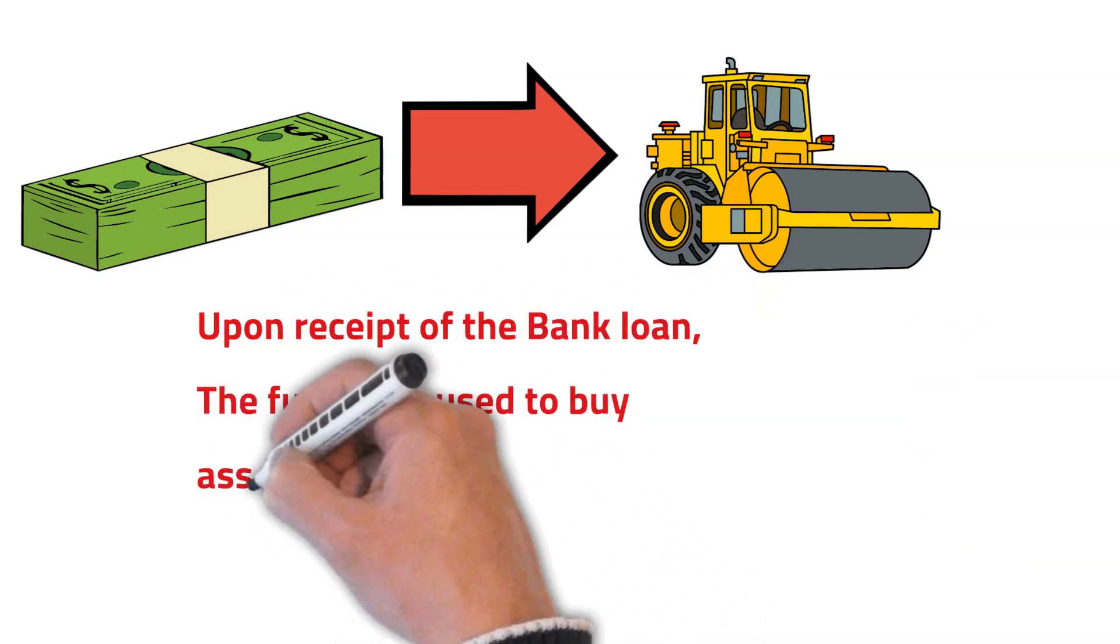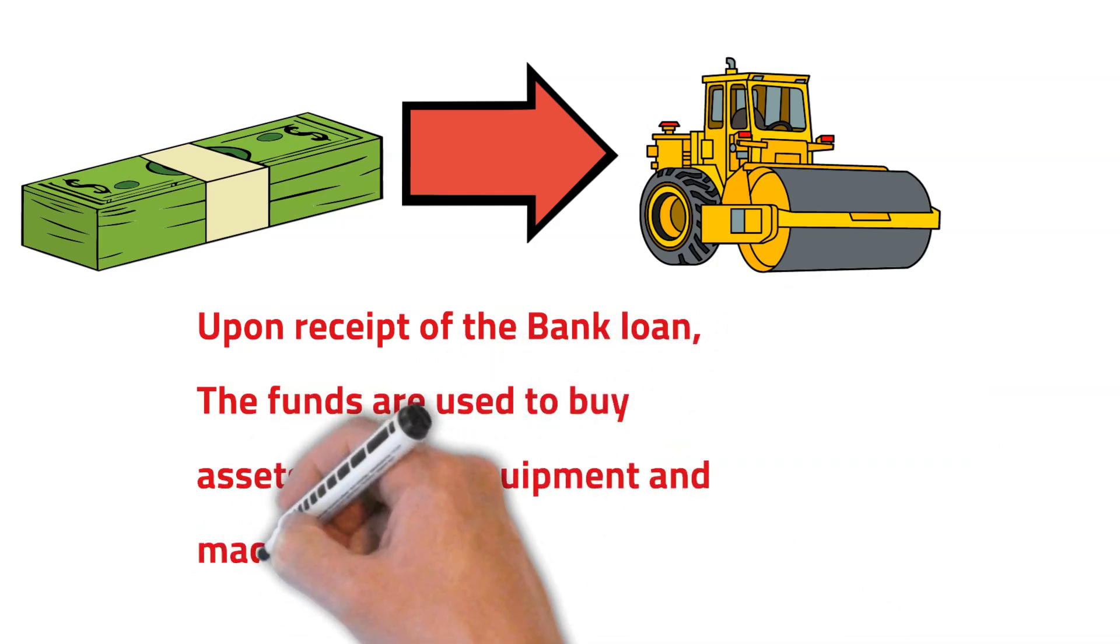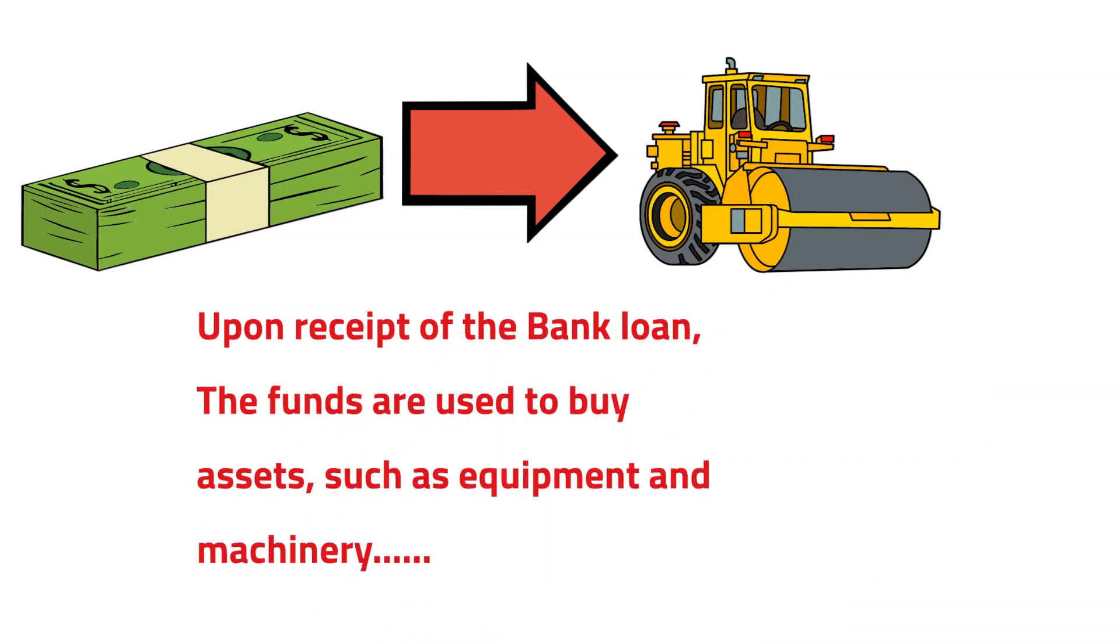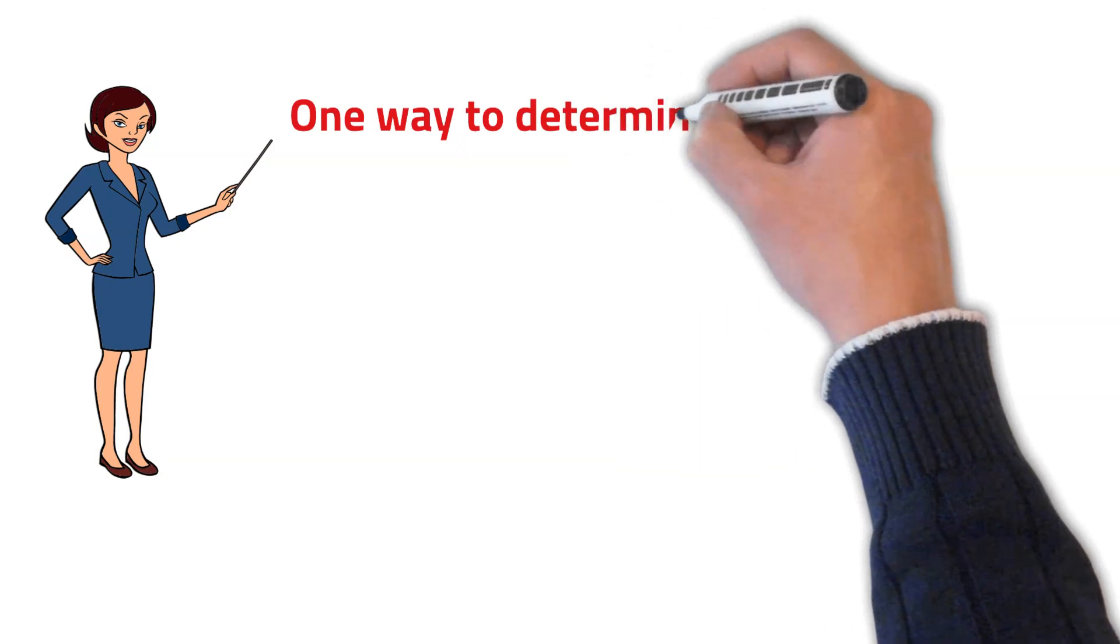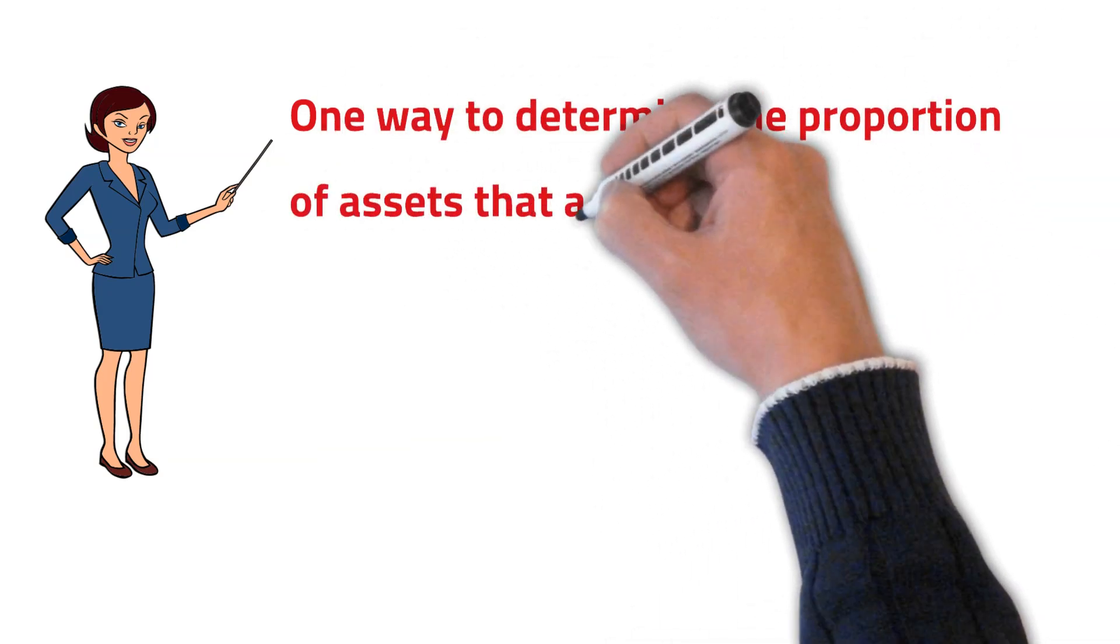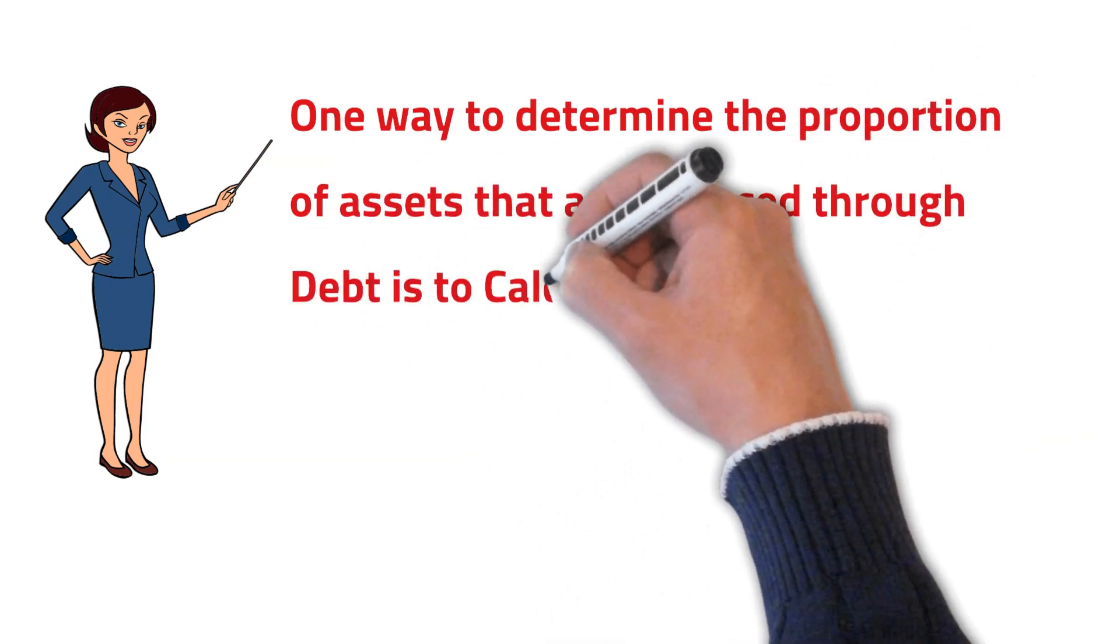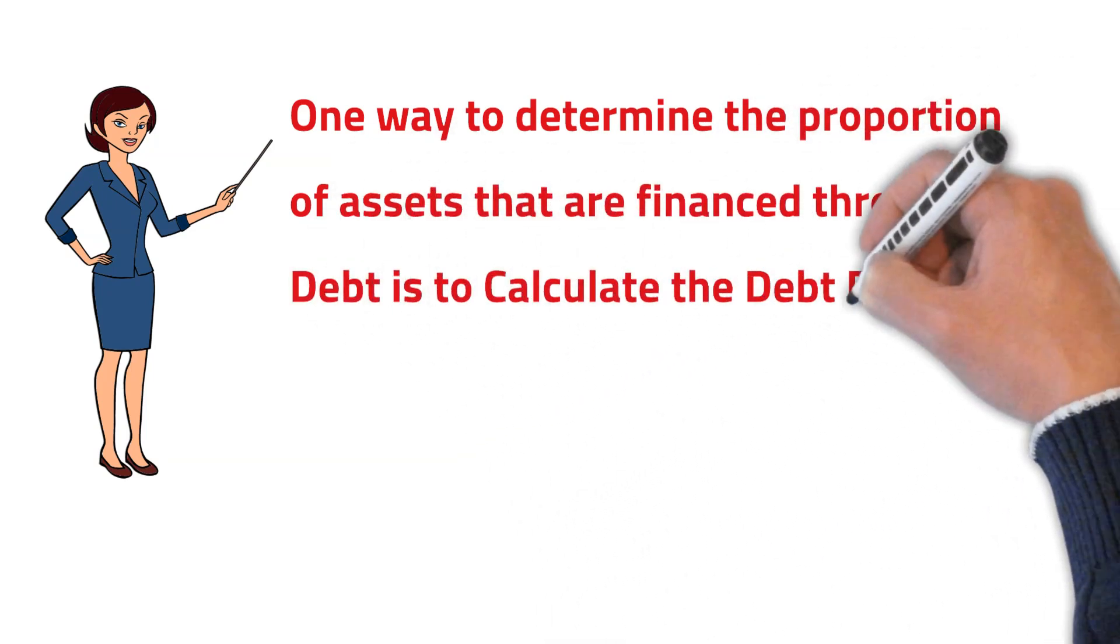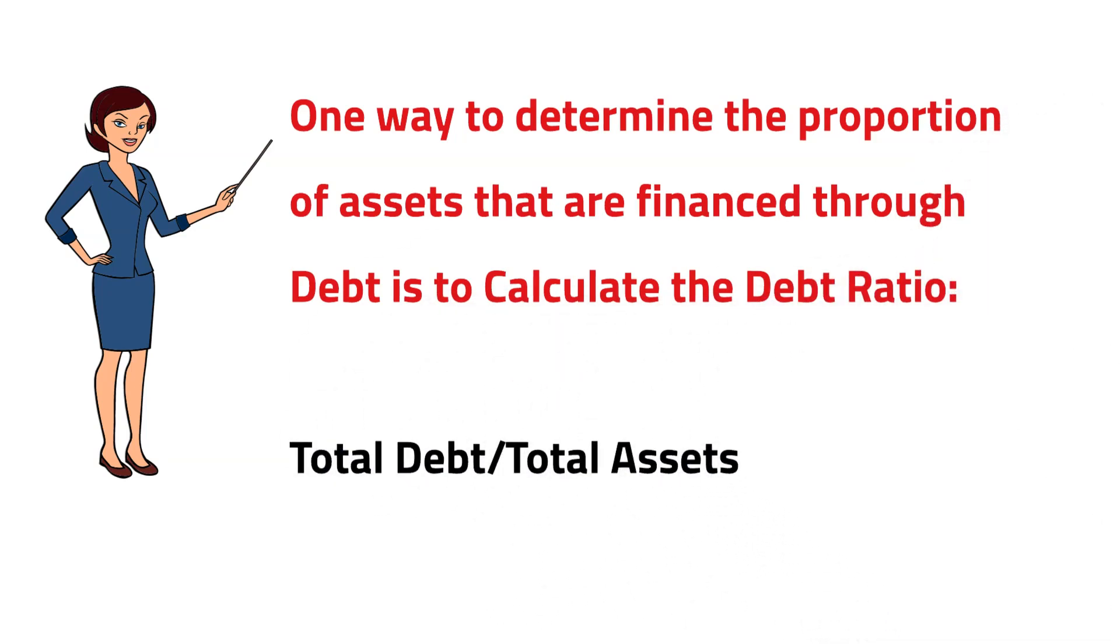utilized to buy assets such as equipment, machinery, or even motor vehicles. One way to determine the proportion of assets that are financed through debt is to calculate the debt ratio: total debt divided by total assets.